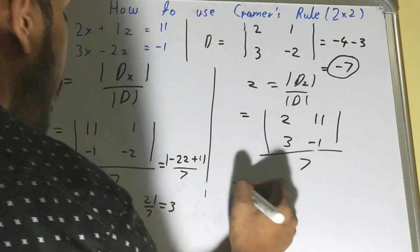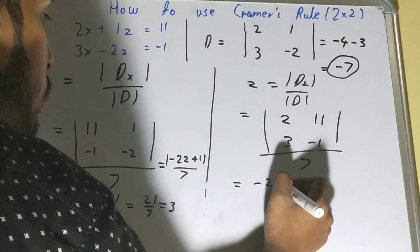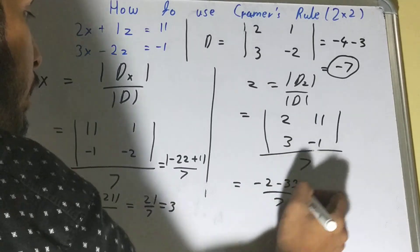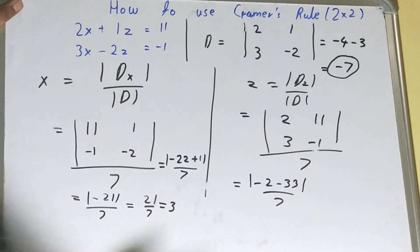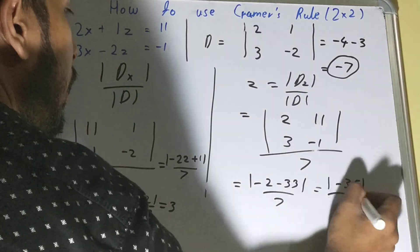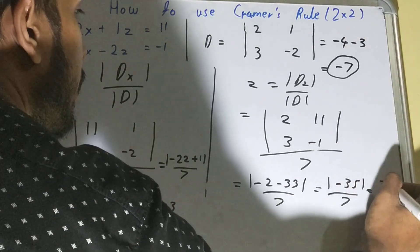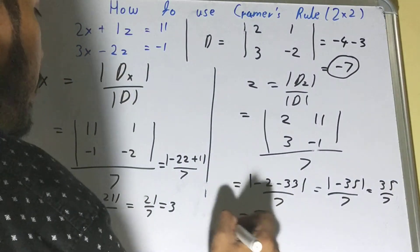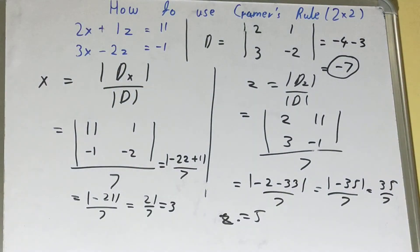After solving the dz matrix we get minus 2 and minus 33, giving minus 35 upon 7. Taking the positive absolute value, that is 35 divided by 7 equals 5. So the value of z is 5 and the value of x is 3. That's how we find the values of x and z using Cramer's Rule. If you liked the video, please like, share, and subscribe — thanks for watching!